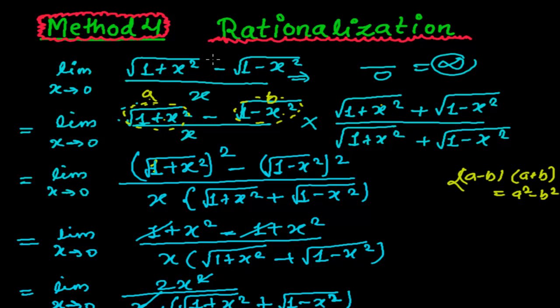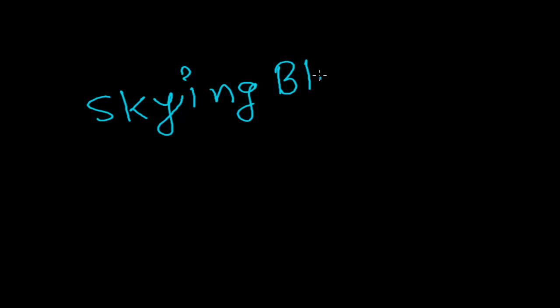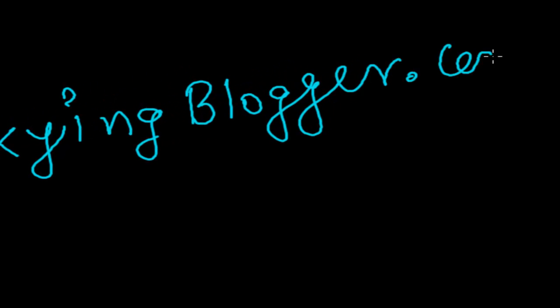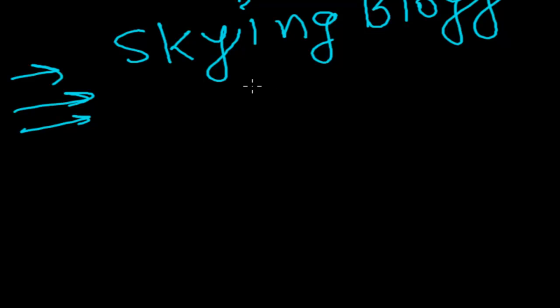If we hadn't rationalized, we would have gotten an undefined value. Here we rationalized the numerator, but depending on the situation we may also need to rationalize the denominator. Visit skyingblogger.com — I have listed many problems related to limits and rationalization there. Solving those will give you a solid understanding of this topic. In the next video we'll be doing something different — bye!